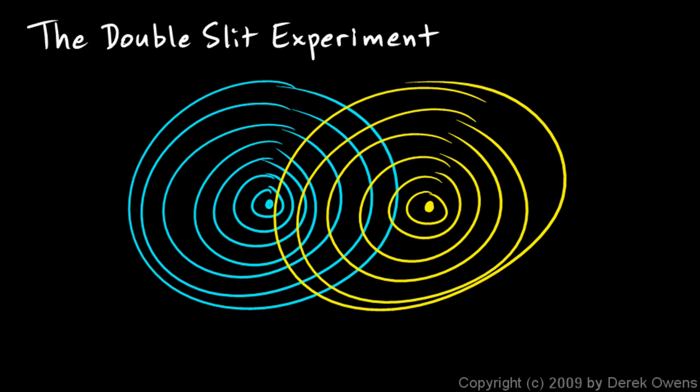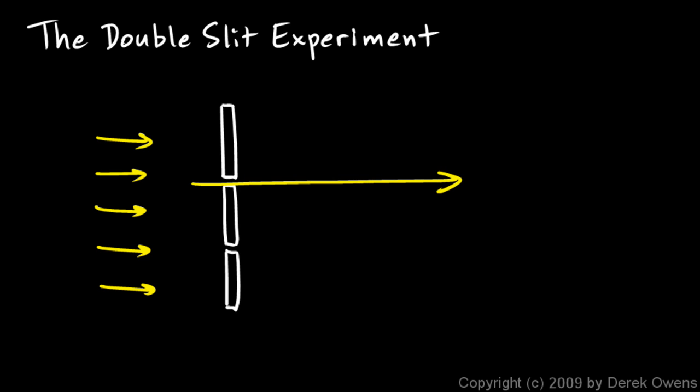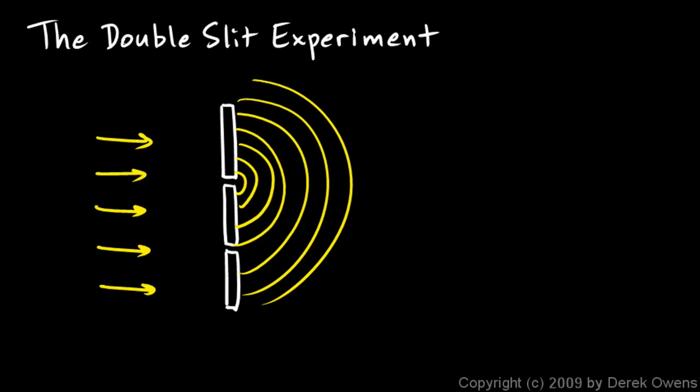Now, what Thomas Young did was this. He set up a little wall with two small slits in it and had some light shining in. When the light went through this slit, if you think of the light as a wave, it's not like shooting a bullet that just flies through the slit and keeps going. The wave comes out of here and it's a wave similar to the wave coming from a point source on the surface of a pond. And then the light coming through the other slit came out as a wave and spread out there.